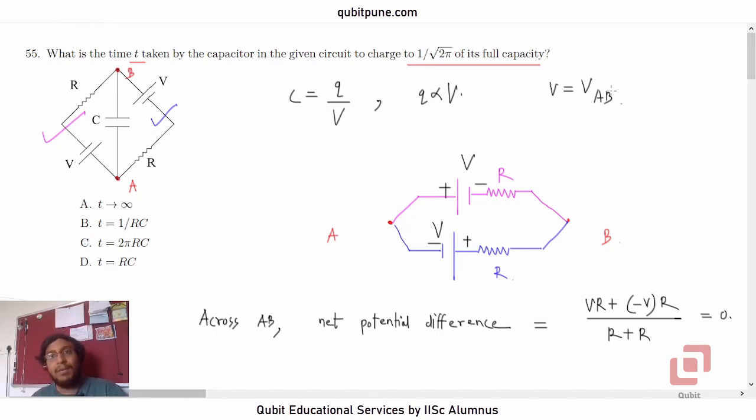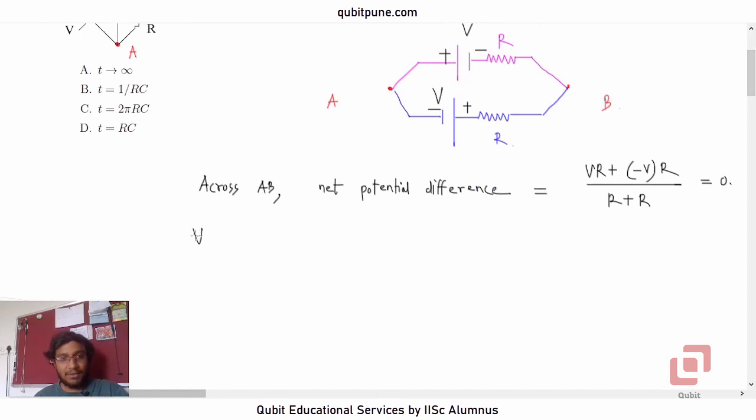So if VAB remains 0 forever, the capacitor will never begin to charge itself. So it will never get charged to 1 over root 2 pi of its full capacity. So for all values of T, VAB is 0. Therefore, capacitor will never begin to charge. So what is the answer?